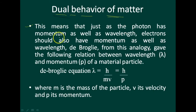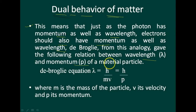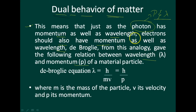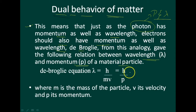This means that just as the photon has a momentum as well as wavelength, the electron should also have momentum as well as wavelength. According to De Broglie, the electron should also have the same momentum and wavelength. From this analogy, he gave the relationship between the wavelength and the momentum of a material particle.